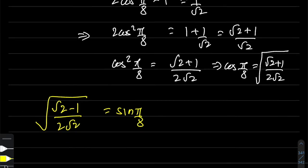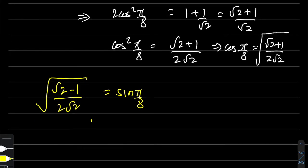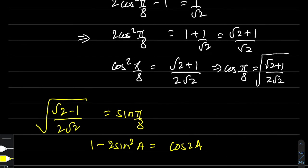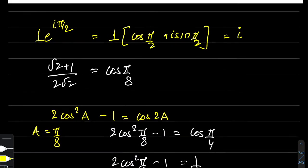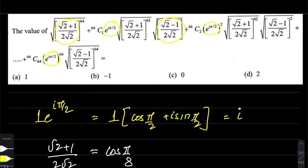You can try it out yourself using the formula 1 - 2sin²A = cos(2A) to figure out how sin(π/8) comes out to be √[(√2-1)/(2√2)]. Now, what is the series all about? The series is basically an expansion of a binomial term.